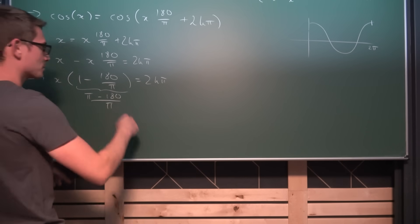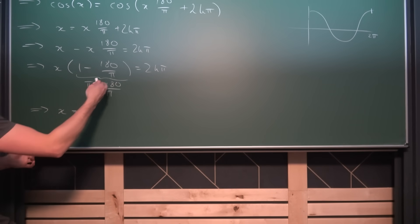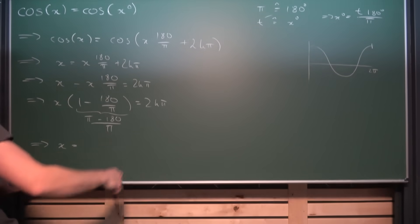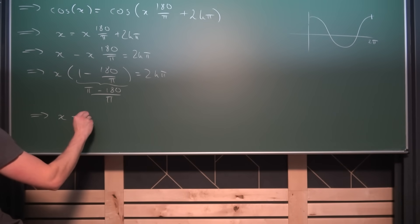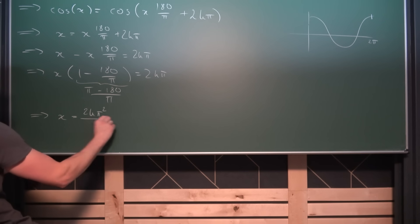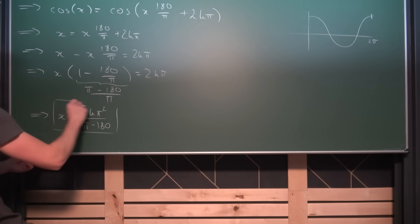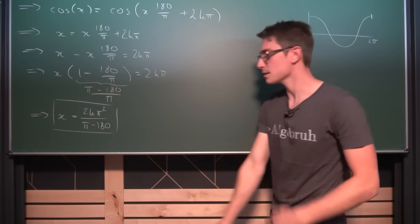And now if we bring this onto a common denominator, we are gonna get π minus 180 divided by π here. And this is obviously not equal to zero in any kind of way. And we can just multiply both sides by its reciprocal. It's invertible, giving us that value for x where this relationship holds is equal to 2kπ times the reciprocal of this. So π squared overall divided by π minus 180. And this right here does the trick.